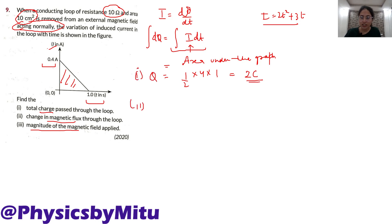Second part me hume bola change in the magnetic flux through the loop. Now, what is formula of EMF is dΦ by dt. Hume current given hai, i is e upon r. Right?